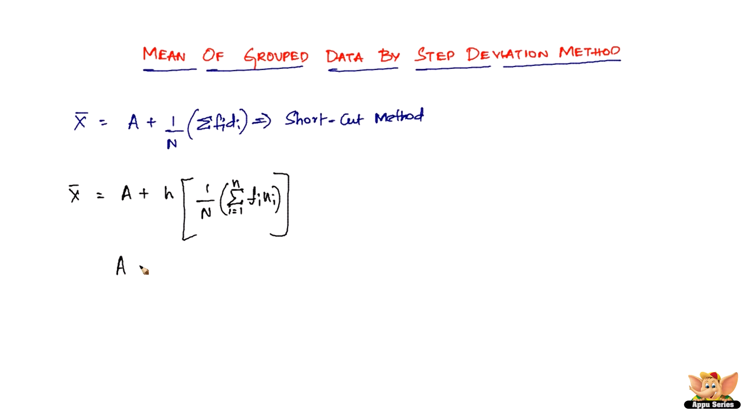Let me write here: everything is the same. A is the assumed mean, no difference from the shortcut method, none at all. Then we've got N also the same - this is the sum of the frequencies, no difference at all. So what is H? H is nothing but a common...